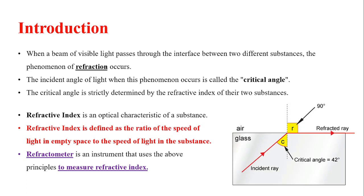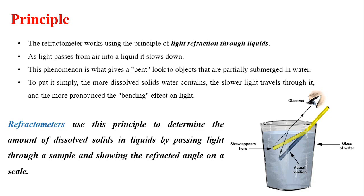The refractometer works on the principle of light refraction through liquids. Whenever light passes through a liquid sample, it experiences a bend in its path. This phenomenon is called refraction. As light passes from air into the liquid, it slows down.